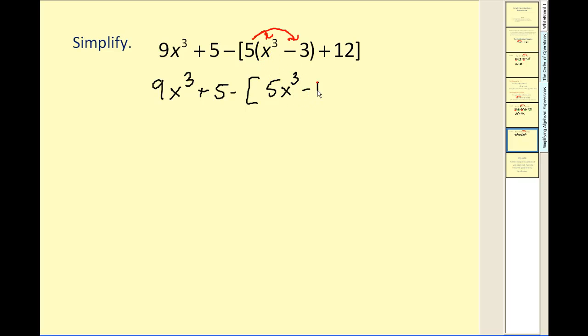We'd have 5x cubed minus 15 plus 12. Now we still need to simplify inside the parentheses. So we can combine the negative 15 plus 12. And notice how I'm saying negative 15. Technically this is plus a negative 15 plus 12.